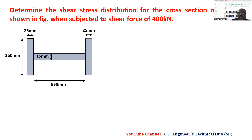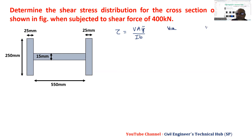We know the formula: tau is equal to VAȳ upon Ib. V we know — that is 400 kilonewtons, so 400 × 10³ newtons.